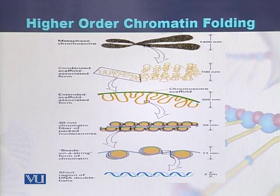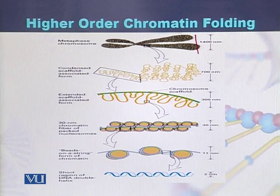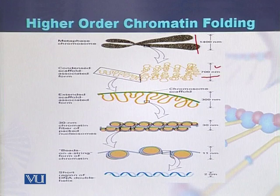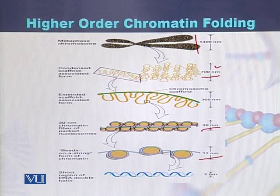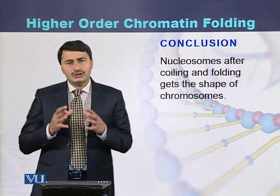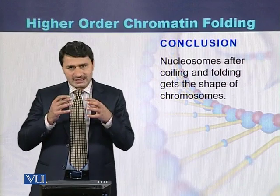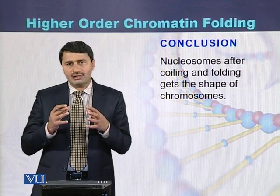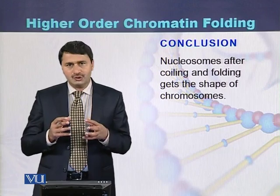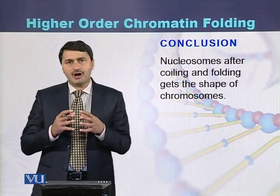This second diagram also describes the folding and unfolding of DNA and the formation of chromosomes. Chromosomes are approximately 1400 nanometers, scaffolds are 700 nanometers, nucleosomes are 30 nanometers in diameter, a single nucleosome has an 11 nanometer diameter, and DNA is 2 nanometers. We can conclude that nucleosomes by coiling and folding are ultimately converted into chromosomes, present in the nuclei of eukaryotic cells or in the nucleoid region of prokaryotic cells.